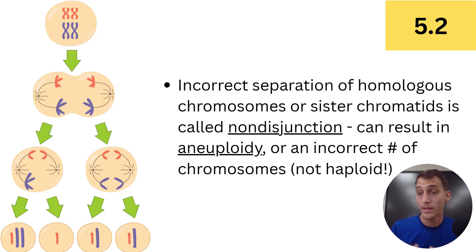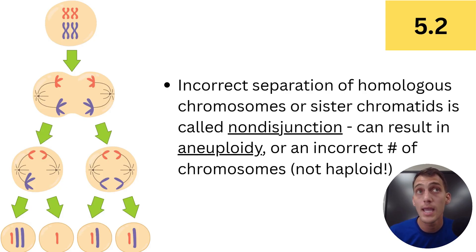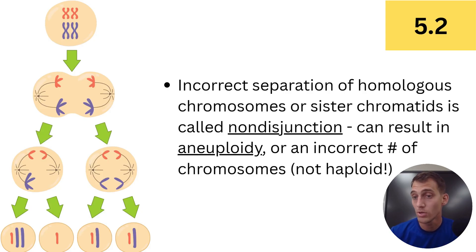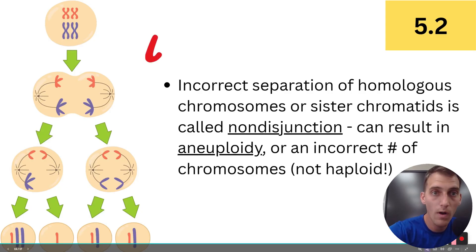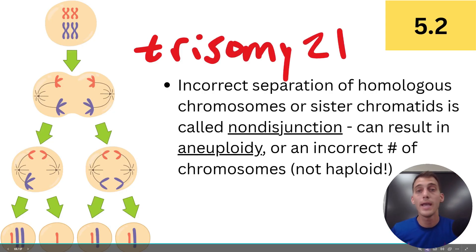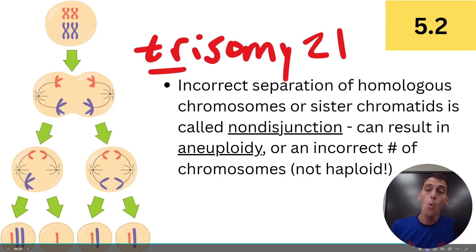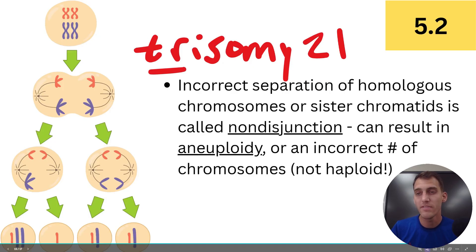We're going to talk later about how non-disjunctions that happen in particular populations of organisms can result in new species being formed — that'll probably come up at the end of unit seven. In human beings, certain aneuploidies result in genetic disorders, like Down syndrome for example. Down syndrome is very well studied — it's a result of what's called trisomy 21. Tri means three, so somebody with Down syndrome inherited one extra chromosome 21 because of a non-disjunction from either their biological mom or biological dad. That's the root cause of Down syndrome, and it's very well understood.